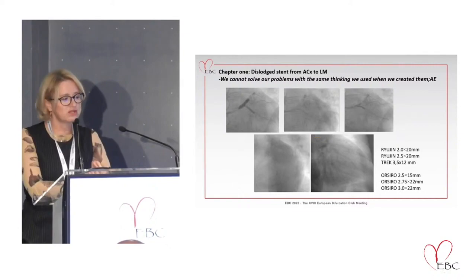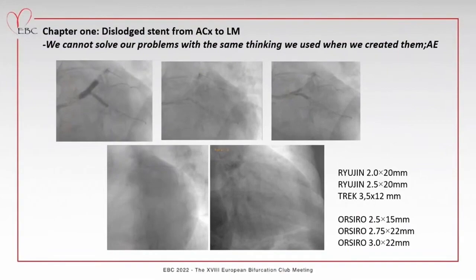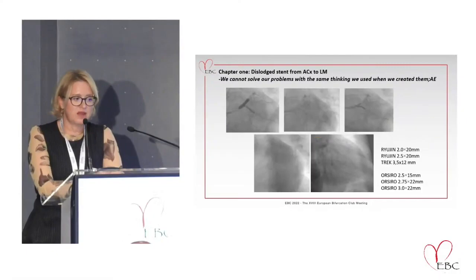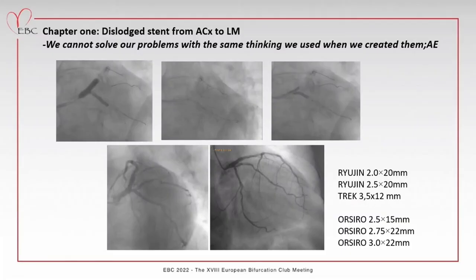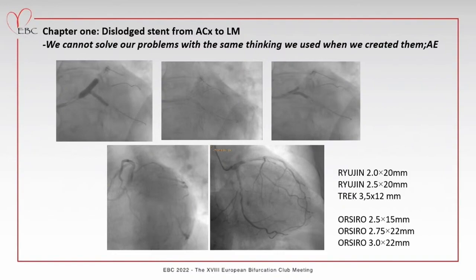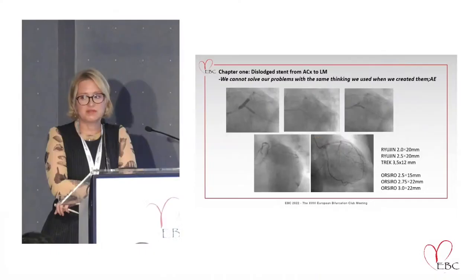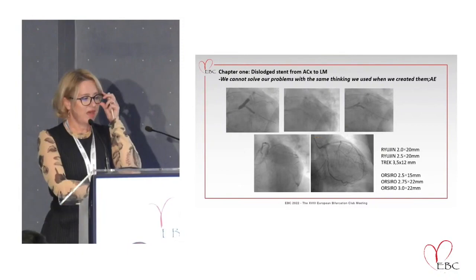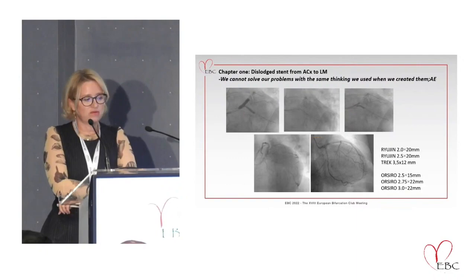I used a balloon for the left main and LAD, then for the circumflex, then implanted a stent in the circumflex followed by a stent in the LAD. I rewired and performed kissing balloon. The angiographic result was good and I was happy - angiographically. However, I didn't do a rePOT of the left main because I was afraid of the protruding stent. Using a T or T-stenting technique, I didn't perform the rePOT because she was stable and had received a lot of contrast.